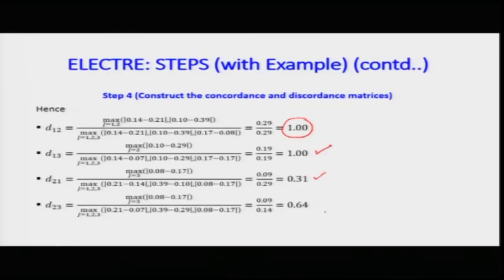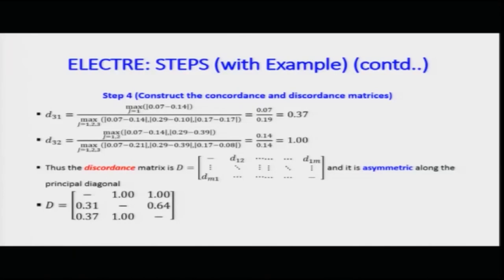D_21 is 0.31, D_23 is 0.64. Just pause and look at these values. Continuing, I have D_31 and D_32. The principle diagonal values are of no consequence, so they are dashes — the same as for the C matrix. The discordant matrix D is also asymmetric along the principal diagonal, and the values are given.